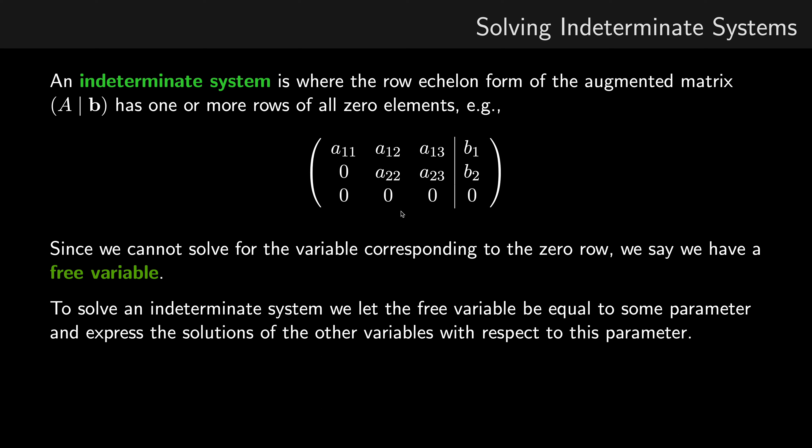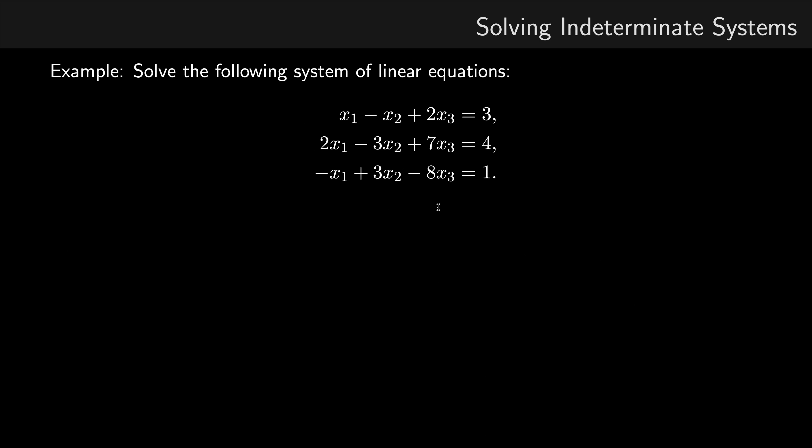Now since we cannot solve for all the variables, we say we have a free variable. So here x3, because we don't know what it is, we say it's a free variable. And what we do is we set it equal to some parameter and express the solutions for the other variables in terms of that parameter. I'll show you an example.